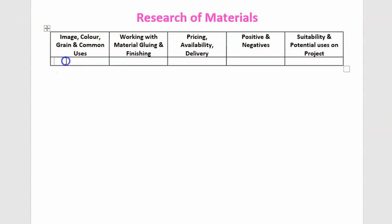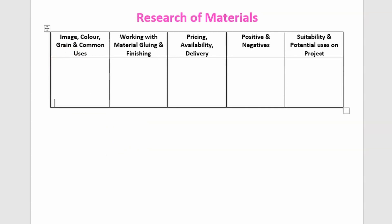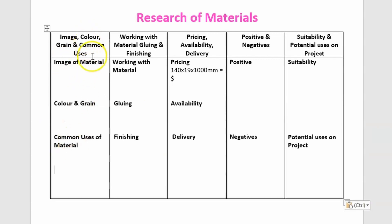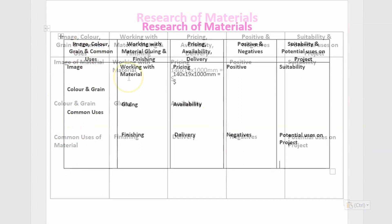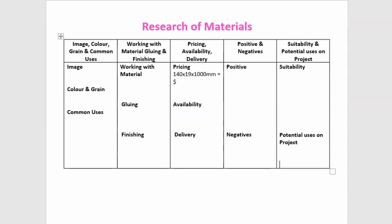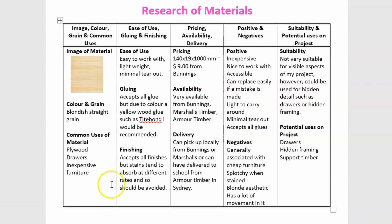From here we need to go through and set up some more information in this area. To save time I have it in another document so I'll copy and paste, but take your time to fill the information in as required. Each of these headings has another sub-heading underneath. What you want it to look like towards the end is something like this — for 'Image of Material', go and pick an actual image of the material.